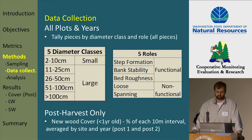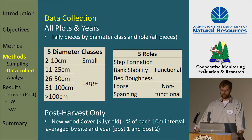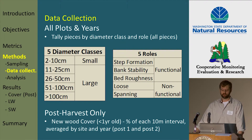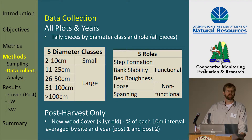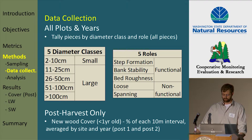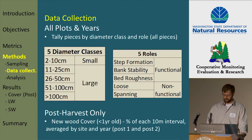Data collection was straightforward. We tallied all pieces according to diameter class and role. The first table outlines our five categorical diameter classes, which we then group into two categories of small and large wood. For the five roles, shown in the second table, we only assigned the highest role to a piece regardless of whether it was contributing in multiple ways. We then grouped these into functional and non-functional categories. We're aware that functional and non-functional is not a great choice of words — loose and spanning pieces certainly contribute important material to the streams in the long run — but these are the words we've been using since the start of the study, so we'll continue to use them.